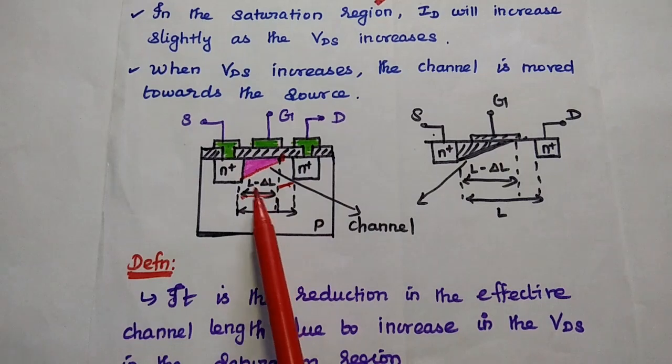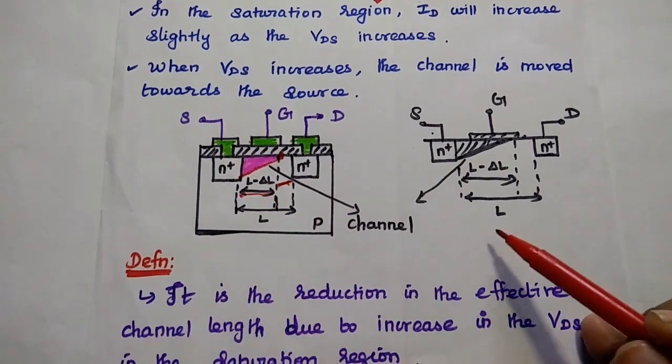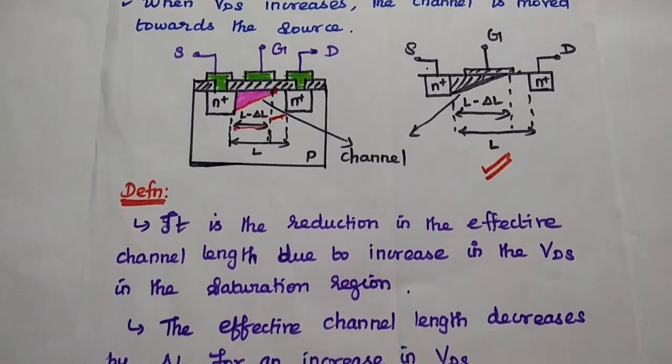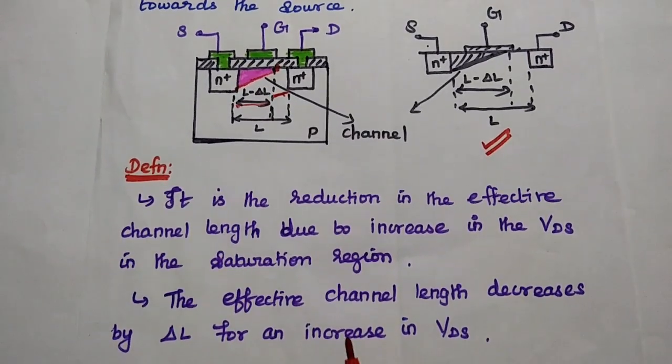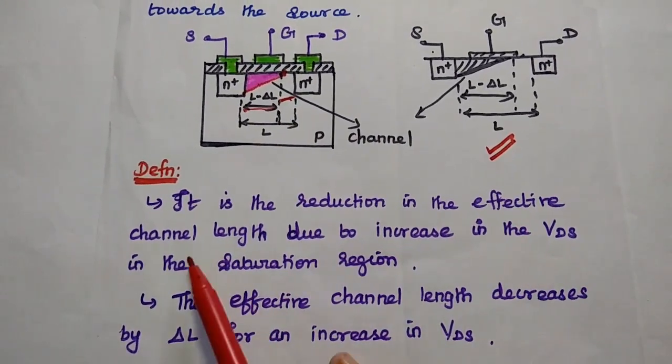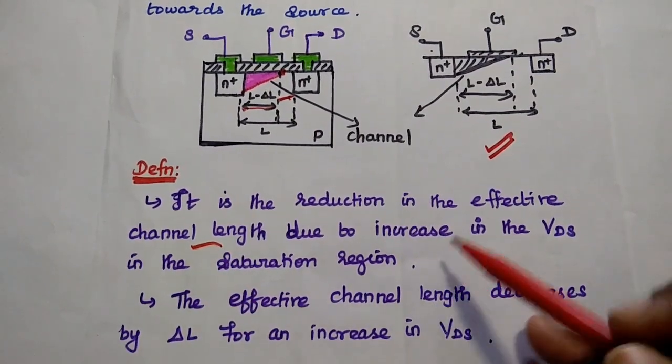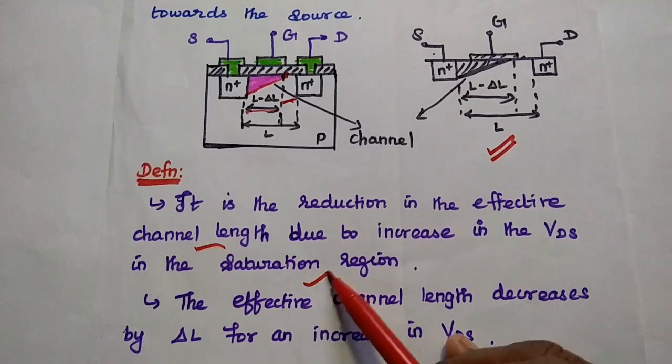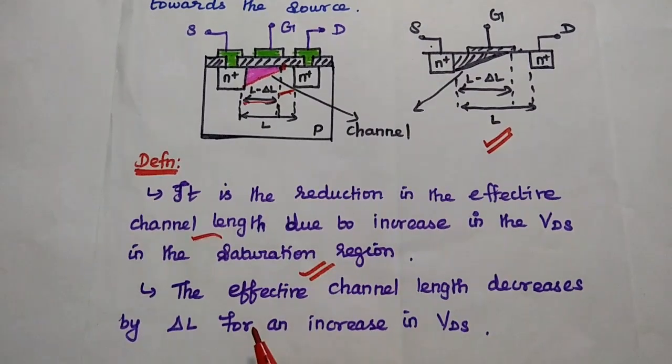We can get the channel length as L minus del n. This concept is called channel length modulation. It is the reduction in the effective channel length due to the increment in VDS in the saturation region. It happens only in the saturation region.